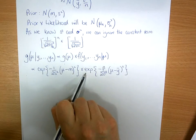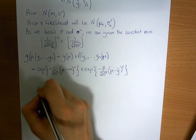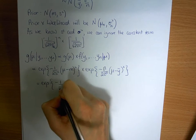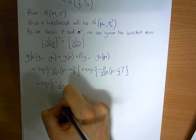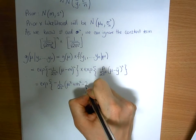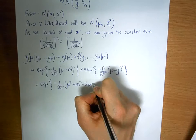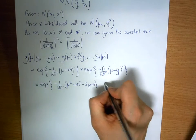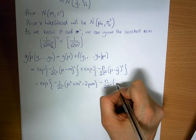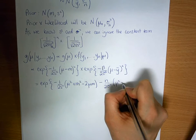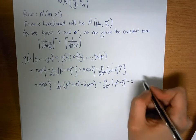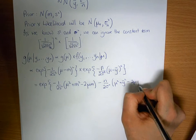We can combine the two exponentials by adding the exponents together and expanding out the brackets, giving the exponential of minus 1 over 2s squared times (mu squared plus m squared minus 2 mu m), minus n over 2 sigma squared times (mu squared plus y-bar squared minus 2 mu y-bar).